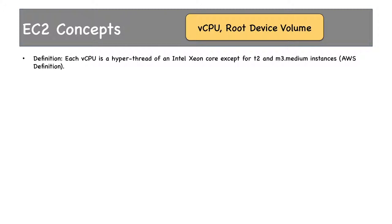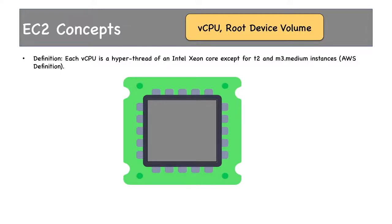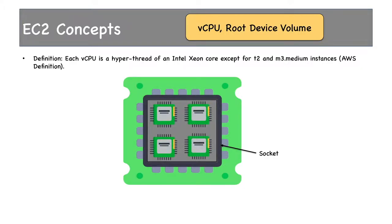There's one more jargon introduced here: hyper-thread. To understand that, let me explain how a CPU works. The CPU is a central processing unit, but it's not the one that directly executes your program — it's the processors or cores that do that. The CPU contains something called a socket, and the processors or cores are housed on the sockets. A quad-core processor means four cores on a single socket; a dual-core processor means two processors on a single socket.